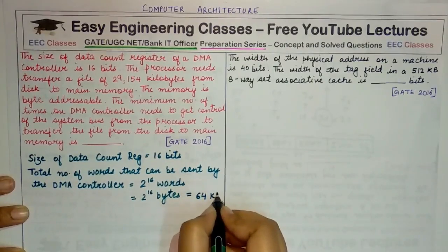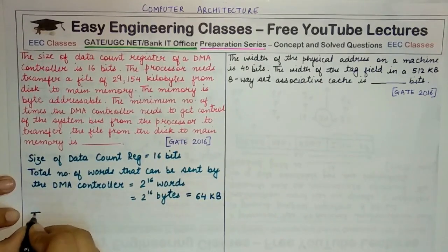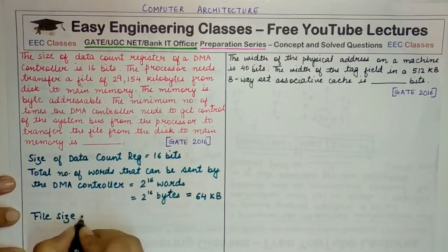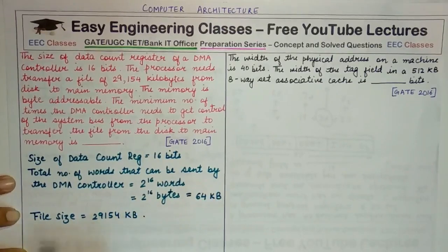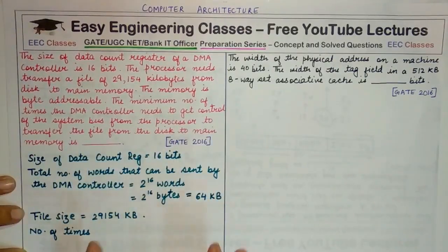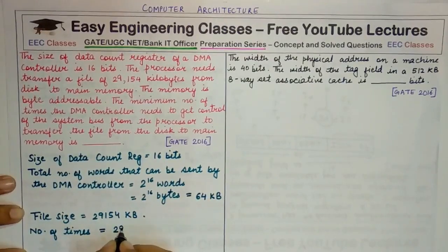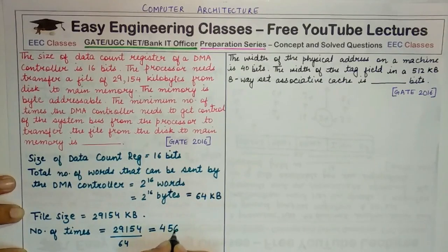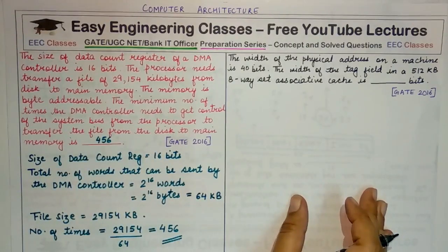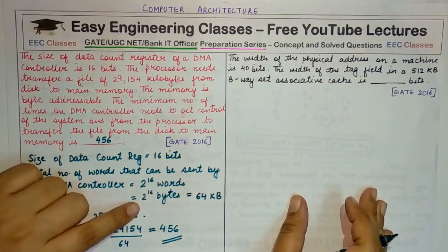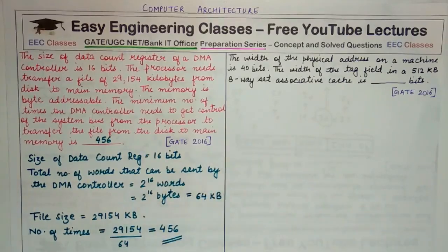The file size to transfer is 29,154 KB. The minimum number of times the DMA controller must take control of the system bus is 29,154 KB divided by 64 KB. This was a direct and straightforward question: total bytes divided by the bytes that can be transferred when the DMA controller takes control of the system bus at one time.